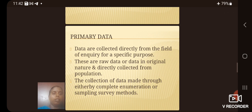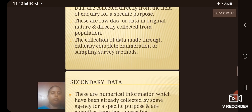Primary data are data collected directly from the field of inquiry for a specific purpose. These are raw data in original nature and directly collected from population. The collection of data made through either complete enumeration or sampling survey method.